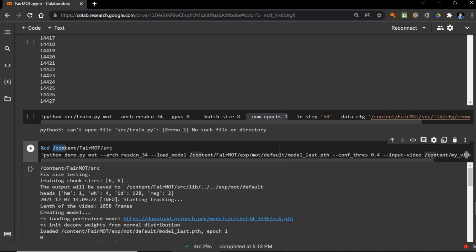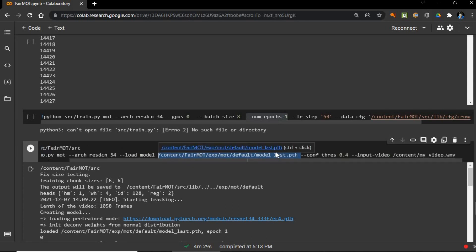Now we will run demo script, which is in this directory. After that we will define the architecture, which is ResNet DCN underscore 34. And we will put the path of our pre-trained model. And we will define confidence threshold argument, and let's set it 0.4. And the last thing we will put the path of our test video.